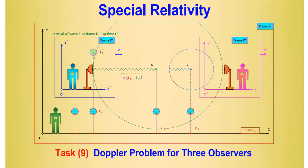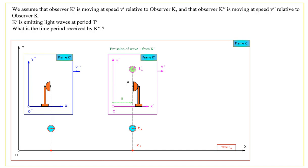Special relativity: Doppler problem for three observers. We assume that observer K' is moving at speed V' relative to observer K, and that observer K'' is moving at speed V'' relative to observer K.